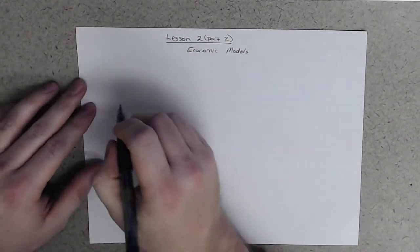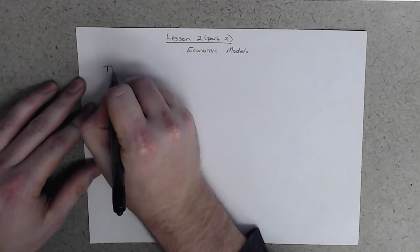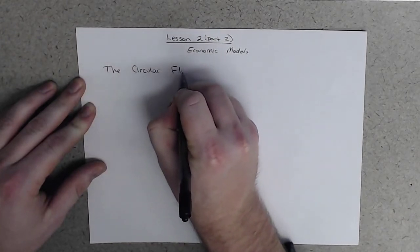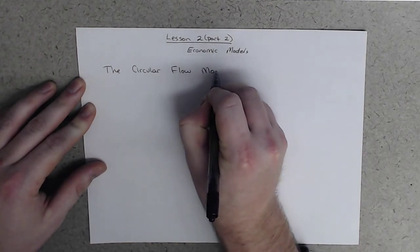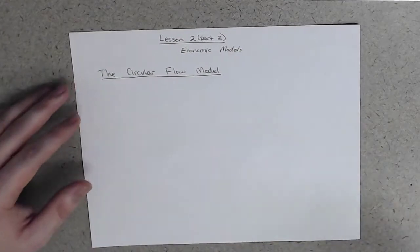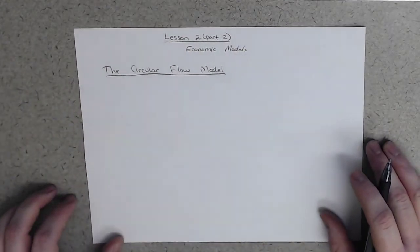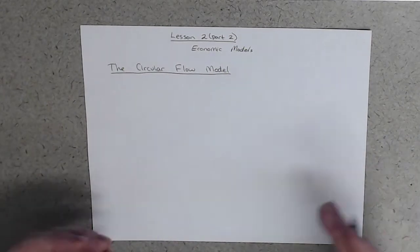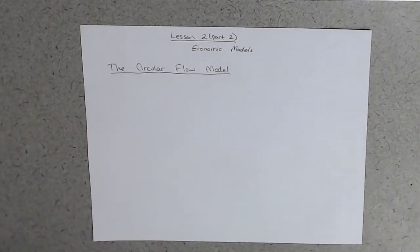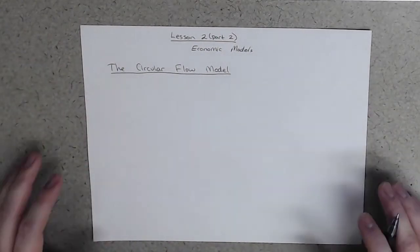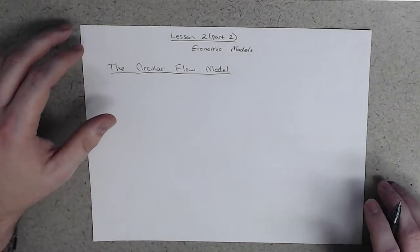And so let's go through our first model in this class, which we call the circular flow model. And this is a simplified version of the model. So we're doing a simplification of a simplification of the world.